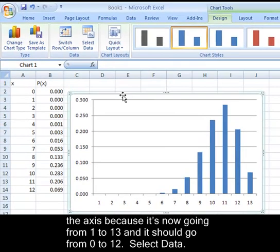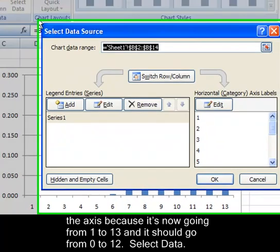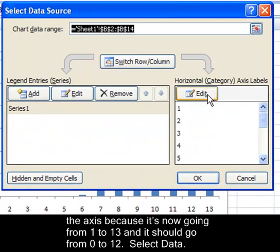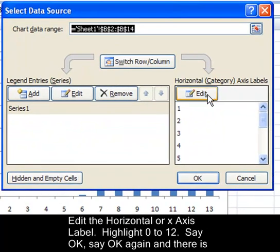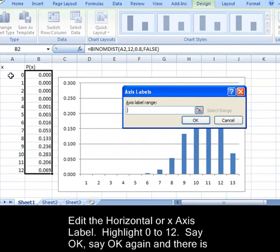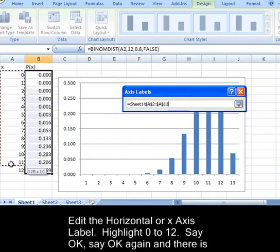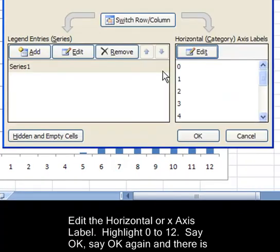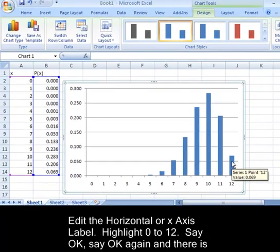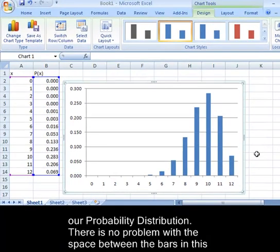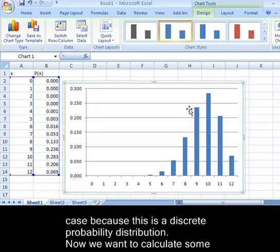Select data, edit the horizontal category or x-axis labels, highlight zero to twelve, say OK, say OK again, and there is our probability distribution. There's no problem with the space between the bars, because this is a discrete probability distribution.